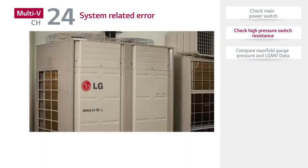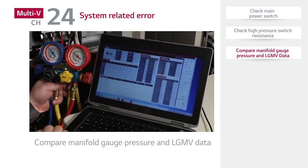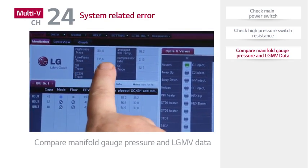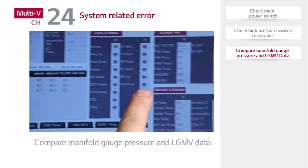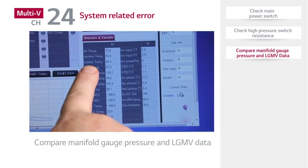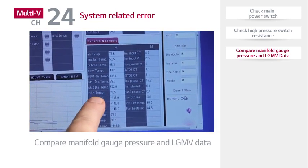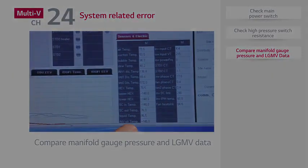Be sure to check the area around the outdoor unit to ensure that there are no environmental factors such as dirty coils, obstructed fans, etc. Check the manifold gauge pressure to compare pressure against the LGMV data. Check if pressure actually rises above the high-pressure setting of 580 PSIG. If the pressure exceeds 580 PSIG, the fan operation is normal and the coils are clean, the refrigerant charge should be reviewed for overcharge or non-condensibles.